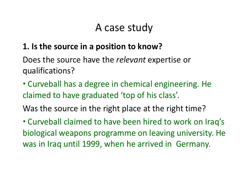Let's apply the three criteria to Curveball. Question one: is the source in a position to know? Curveball had a degree in chemical engineering and claimed to have graduated top of his class, giving him some relevant expertise. He claimed to have been hired to work on Iraq's biological weapons program after university, and was known to have been in Iraq until at least 1999 when he arrived in Germany to defect. So on position to know, he scores reasonably well — he could have been in the right place at the right time and has some relevant qualifications.